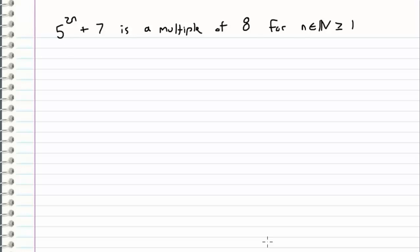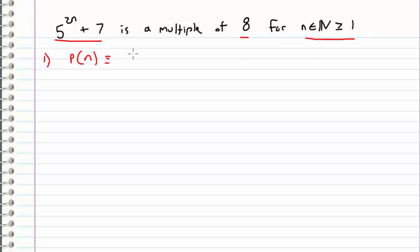Hey guys, welcome to another video. In this example, what I will be proving is that 5 to the 2n plus 7 is a multiple of 8 for an integer n that is greater than or equal to 1. The person who submitted this problem wants us to prove this using induction. The first step in a proof by induction is to create our statement. We will define our statement as P of n, which is defined as: 8 divides 5 to the 2n plus 7.